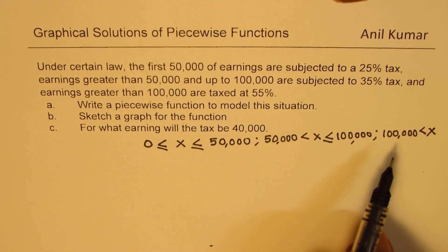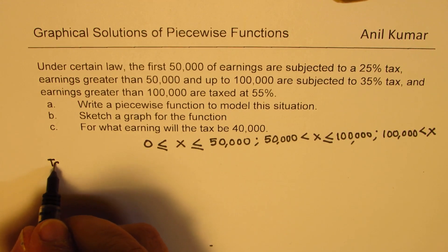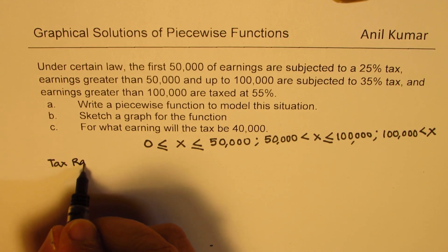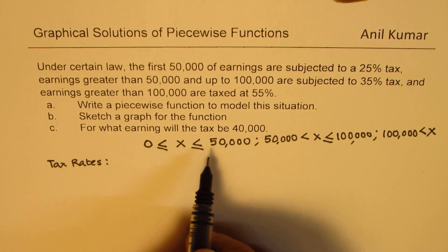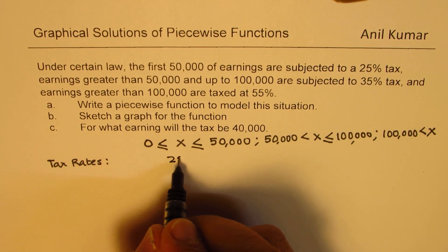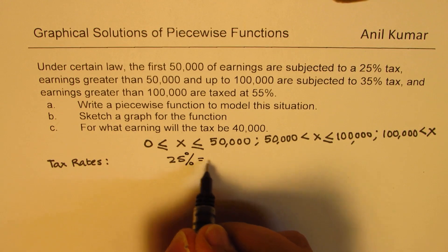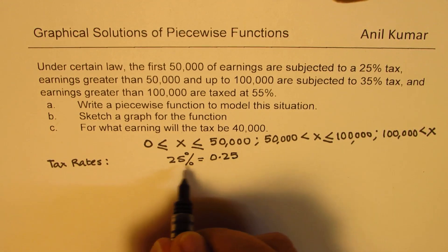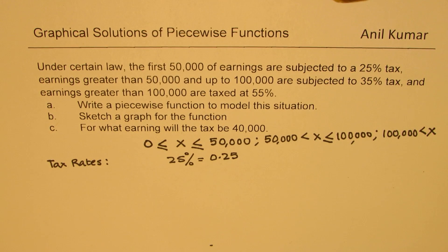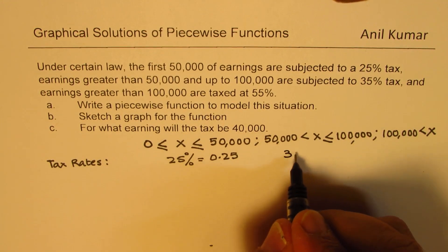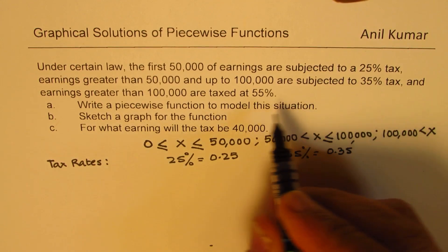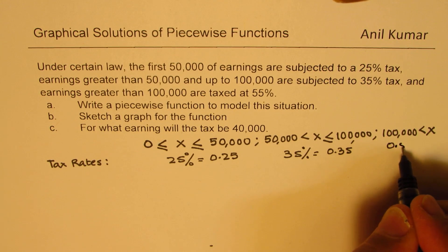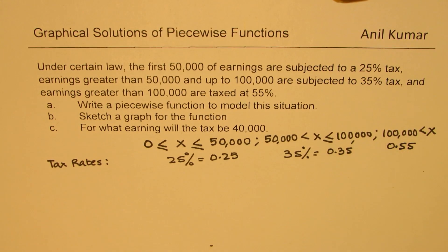Now for these earnings, we are given tax rates. The tax rates for each bracket are: in the first case, it is 25%, which is 0.25. Then we have 35%, which is 0.35, and 55%, which is 0.55 in decimals.